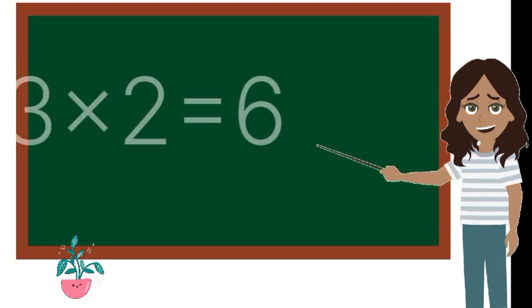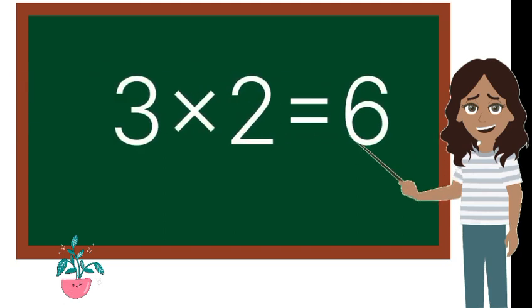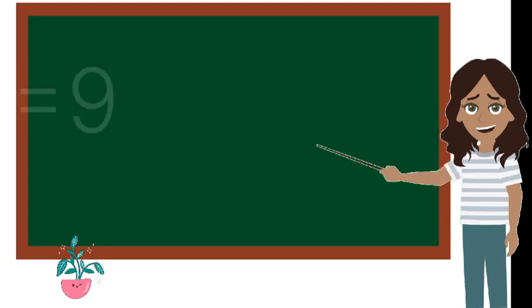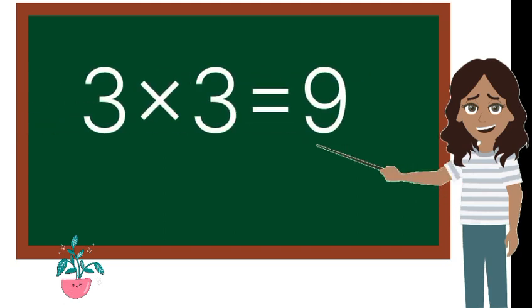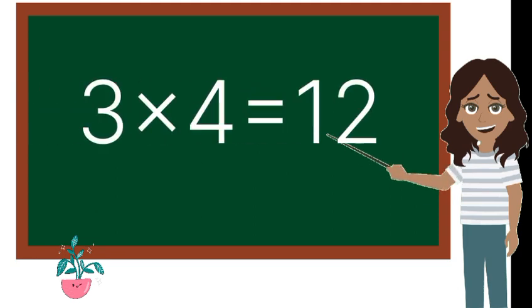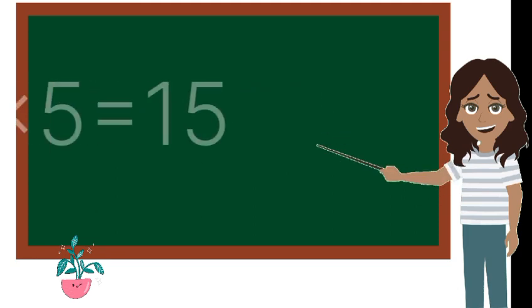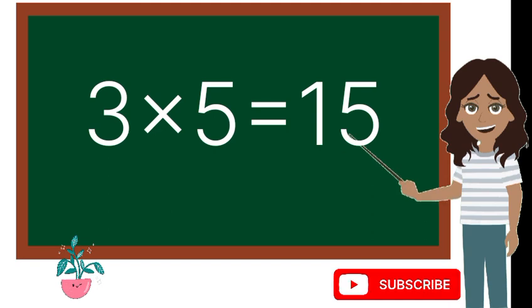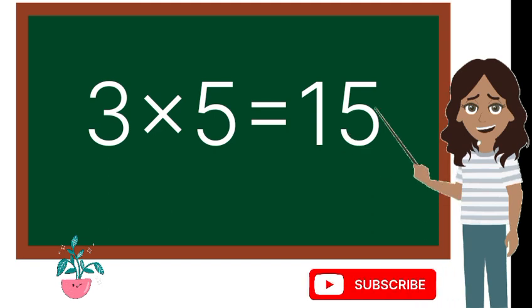3 1s are 3, 3 2s are 6, 3 3s are 9, 3 4s are 12, 3 5s are 15.